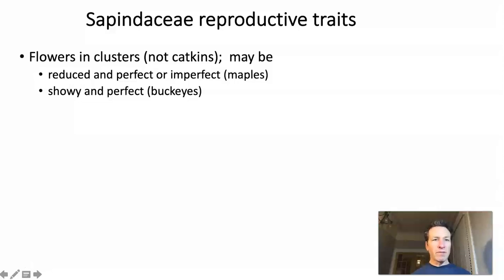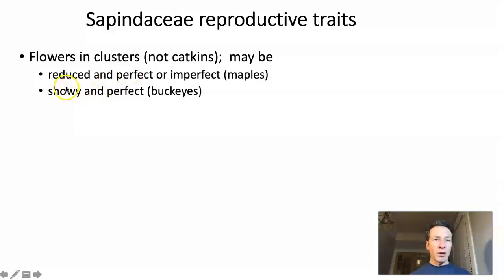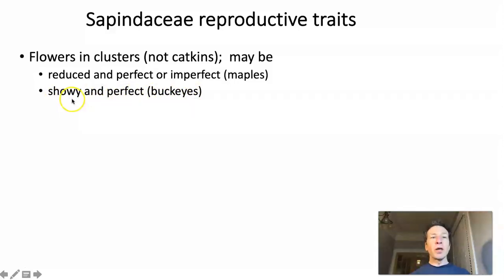For Sapindaceae reproductive traits: flowers are in clusters, but unlike Betulaceae and Fagaceae, they are not in catkins. For the Aceroideae or maples, flowers are reduced and sometimes perfect, sometimes imperfect. For the Hippocastanoideae — the buckeyes — the flowers are very different: they are showy, sometimes perfect, and easy to recognize.